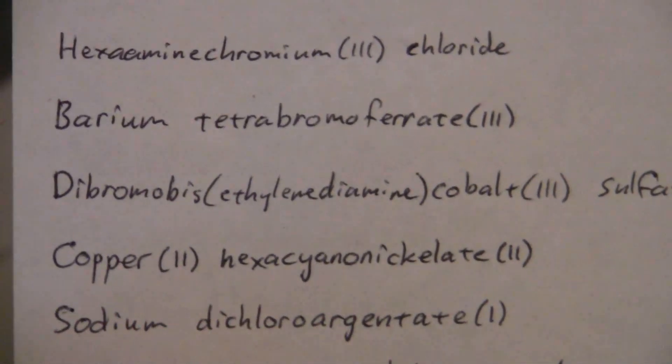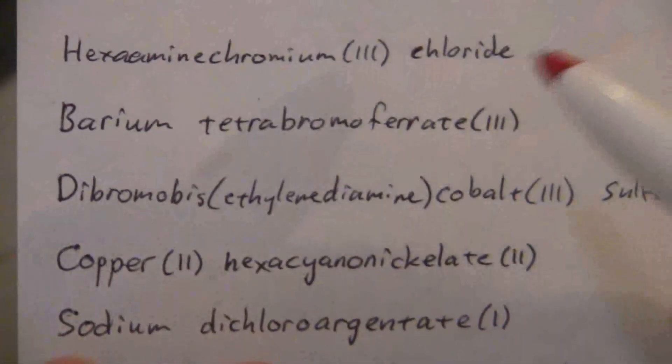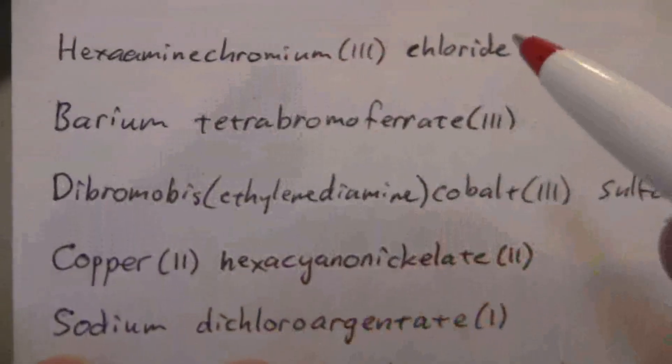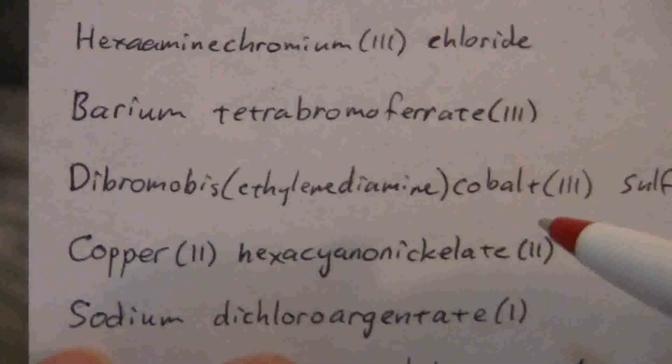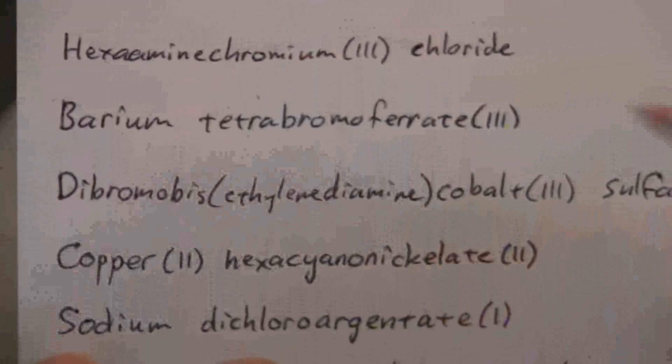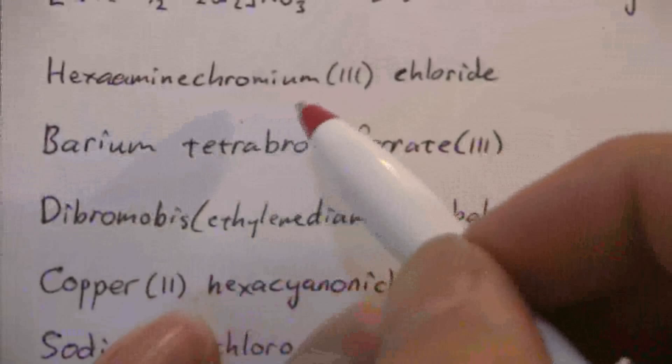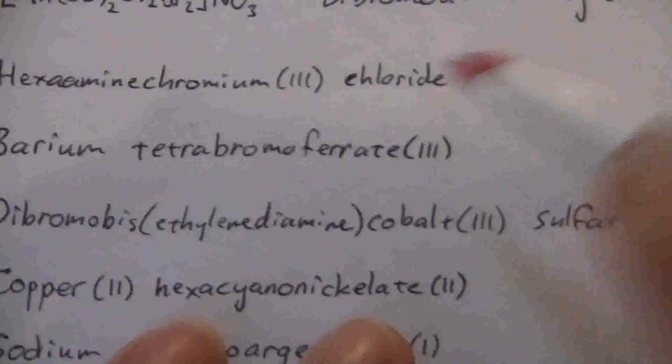Okay, now we're going to take the name of some complex compounds and write the formula from the name. All right, so here we have hexamine chromium(III) chloride.